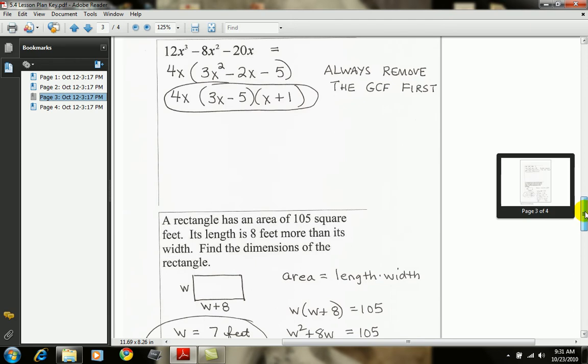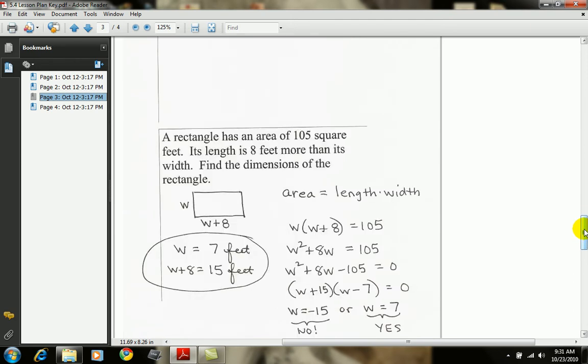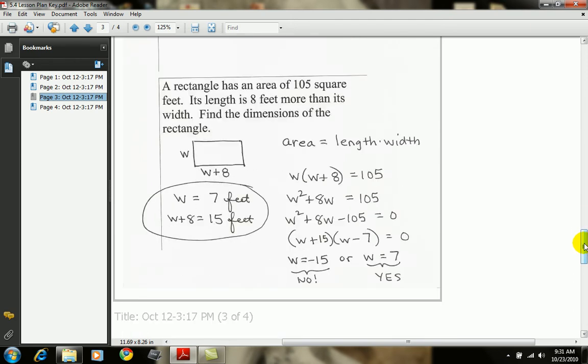Okay, in this word problem, an area of a rectangle is given to be 105 square feet. The length is 8 feet more than the width. Find the dimensions.